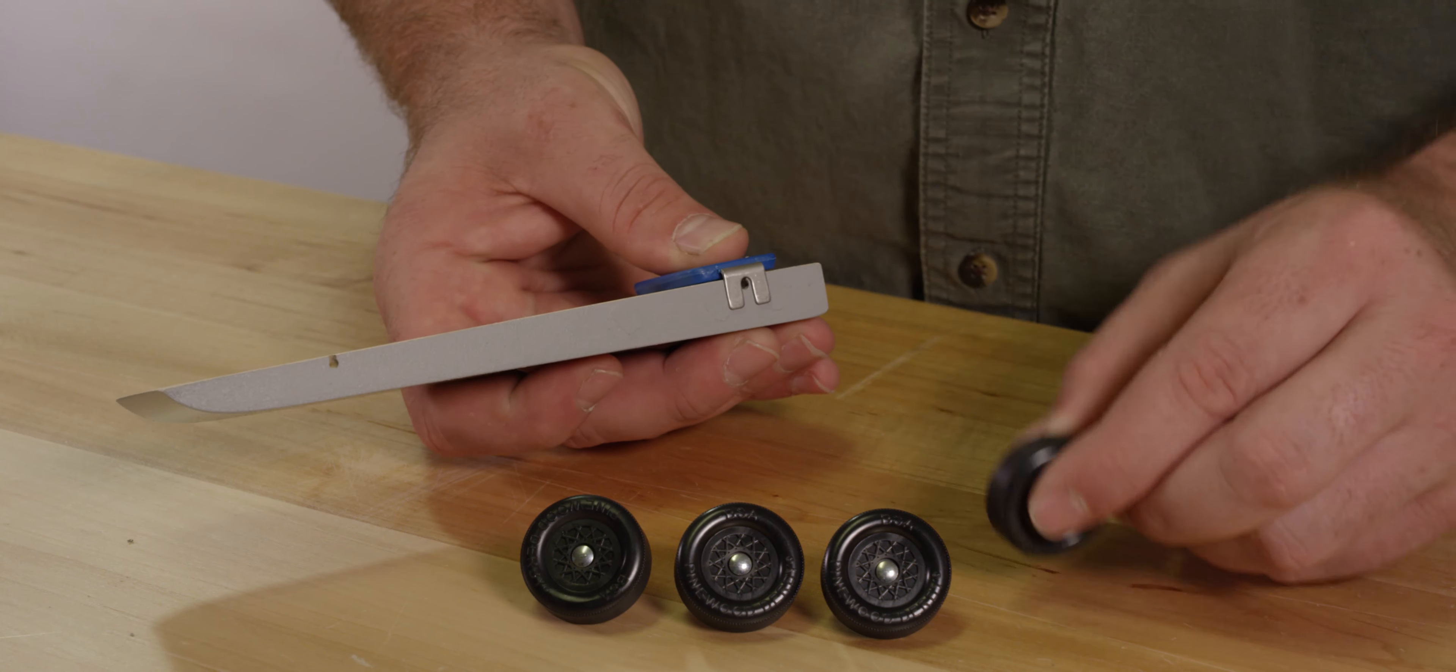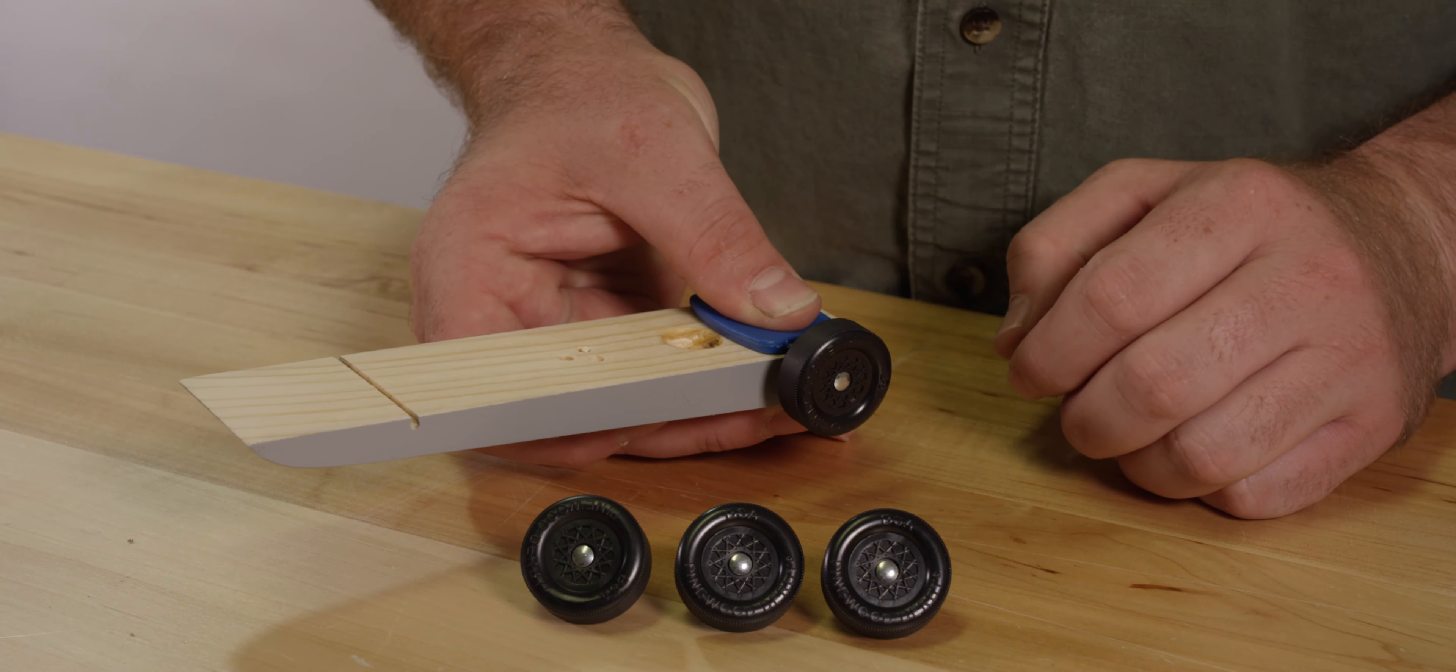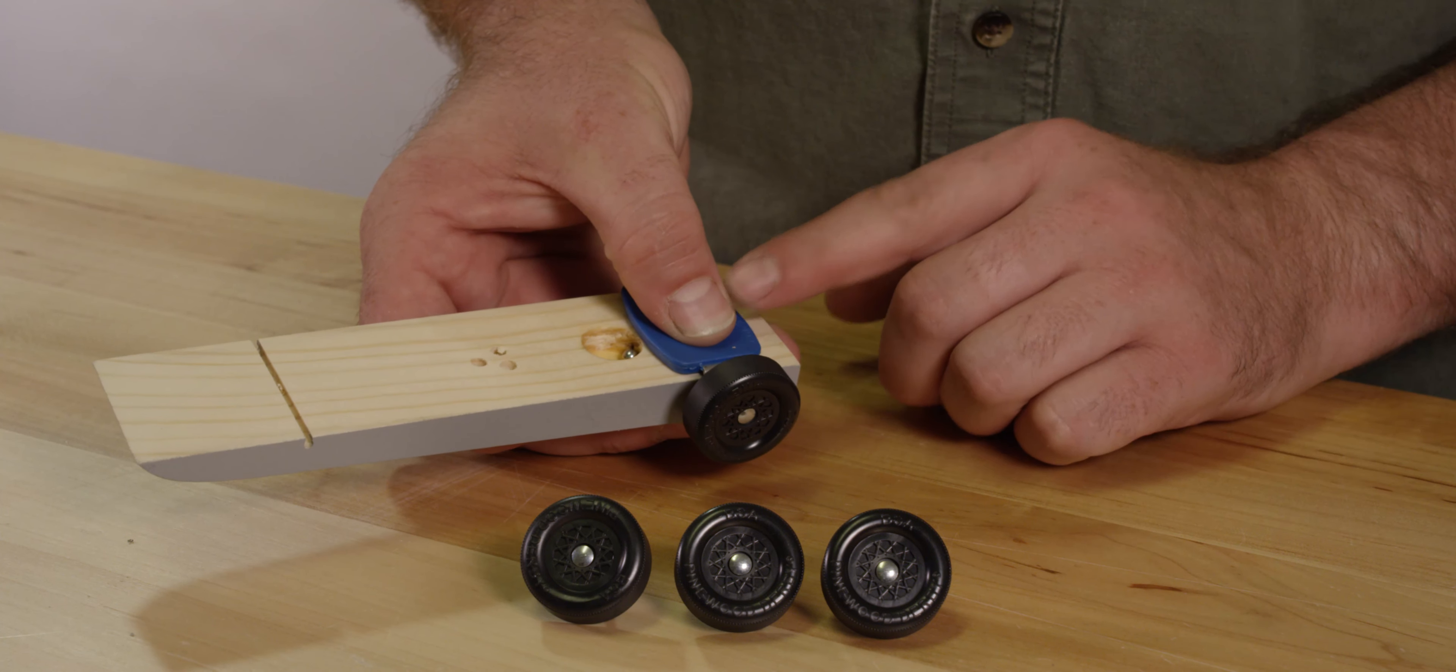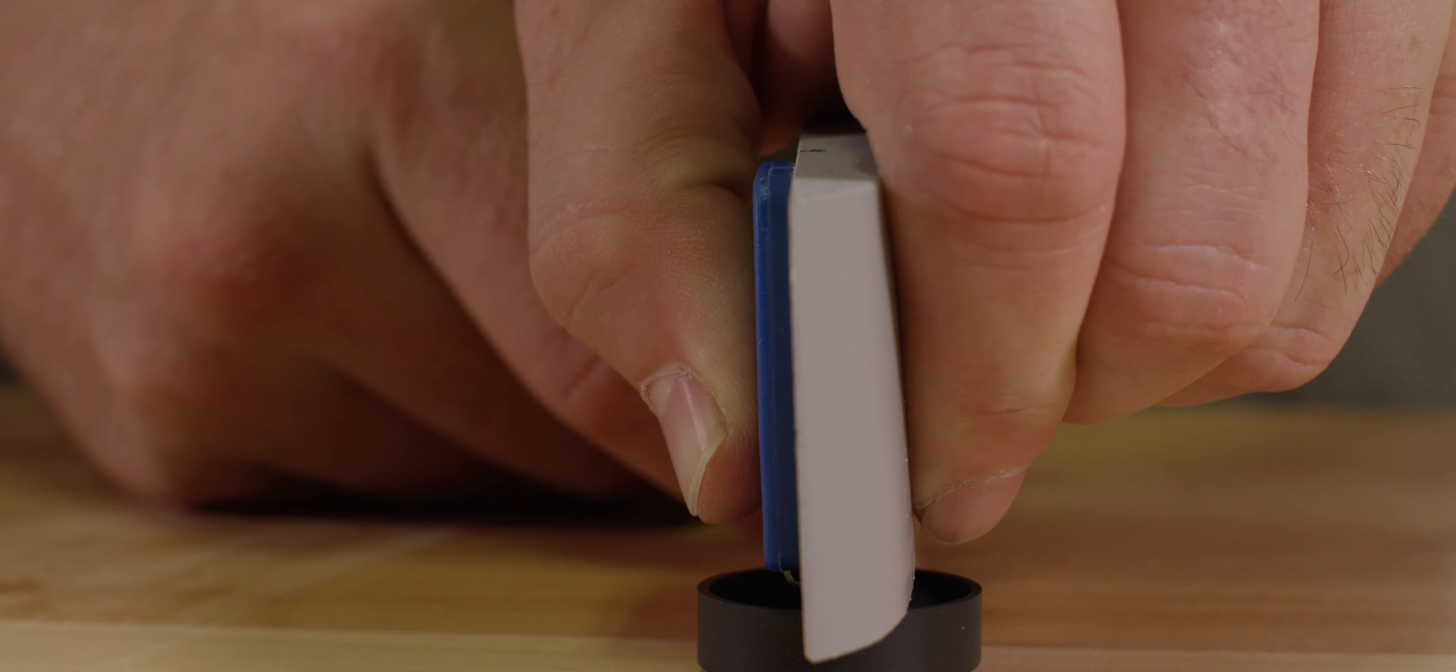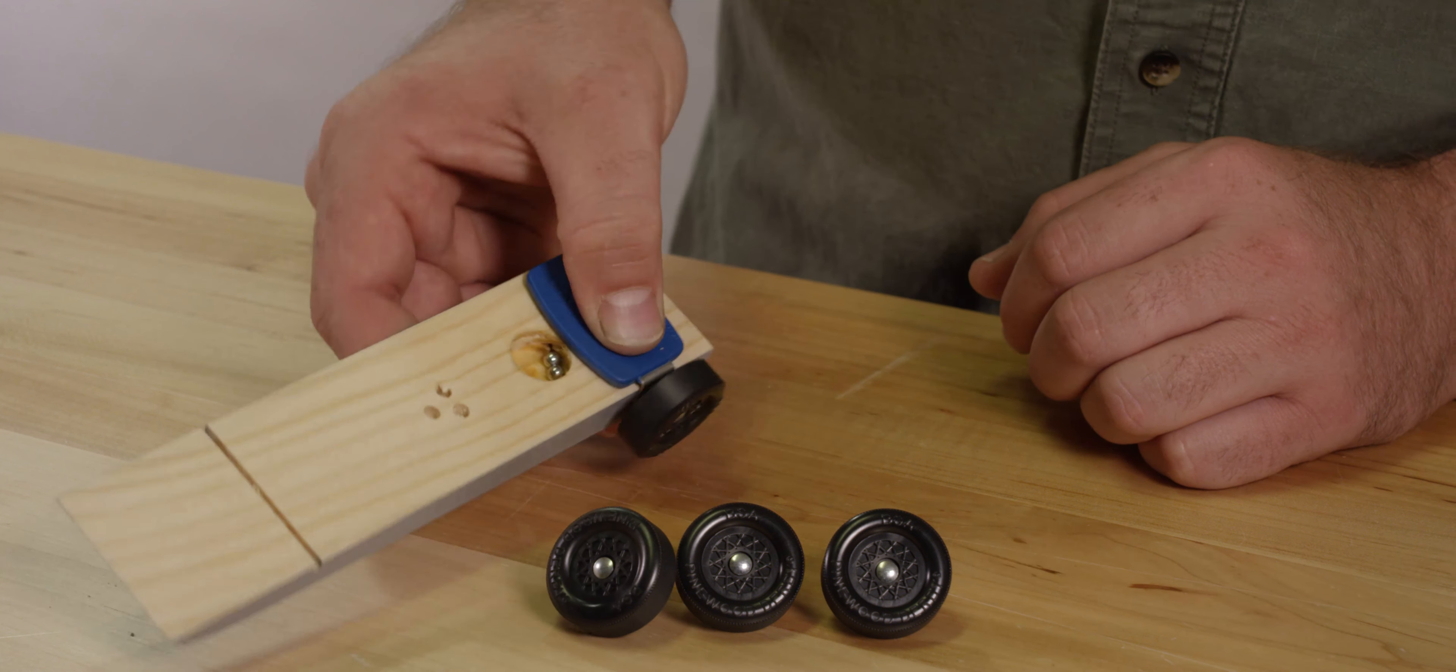Start by inserting your axle and wheel into the slot until it is in about a half an inch. Using the thumb indent, firmly hold the axle guide and car block while rotating the block on its side. While using the block as leverage, push down on the block to slide the axle in all the way until it won't go any farther.